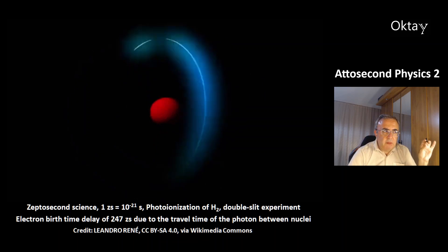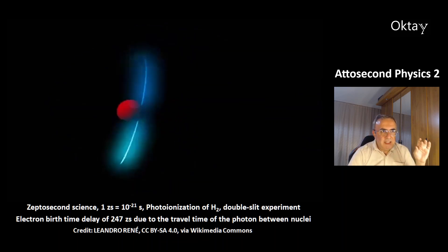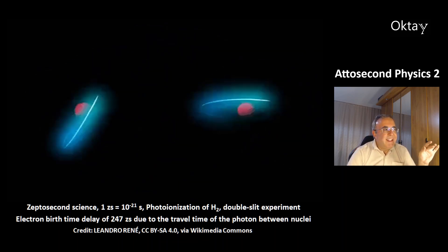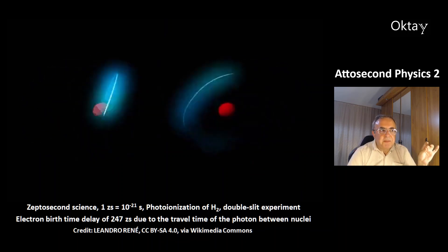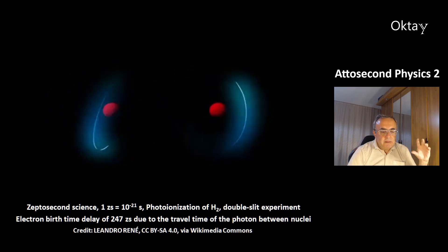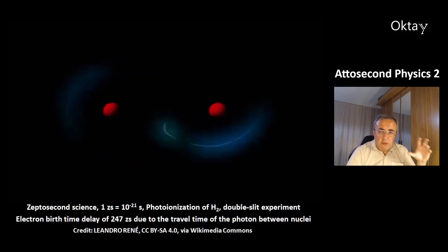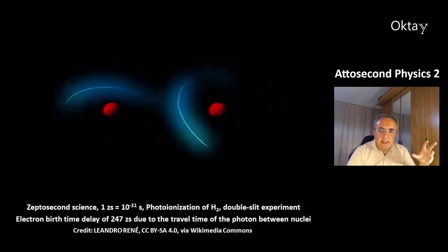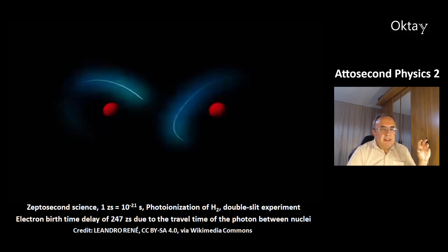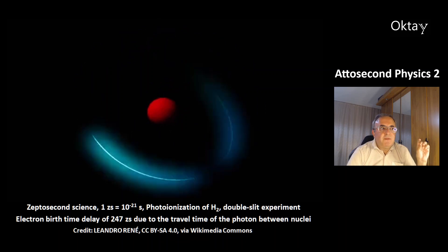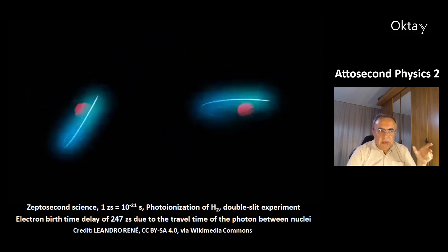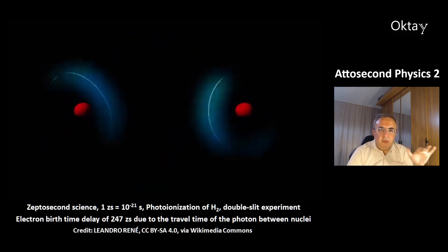This is a nice animation of the molecule H2. We will see it soon at the second atom. This is an example of zeptosecond science. One zeptosecond is 10 to the minus 21 seconds. This is an experiment of the photo-ionization of hydrogen with a double-slit experiment. And there was an electron burst time delay of 247 zeptoseconds, due to the travel time of the photon between the two nuclei.